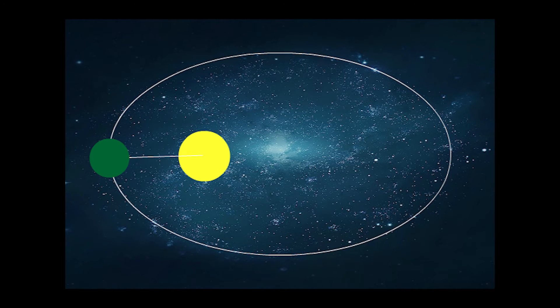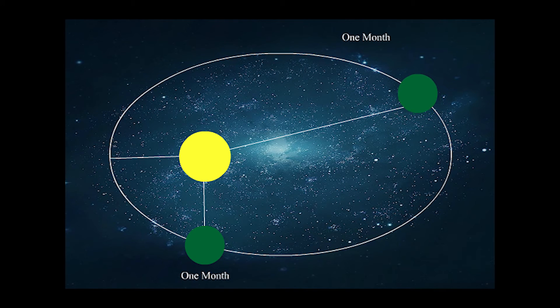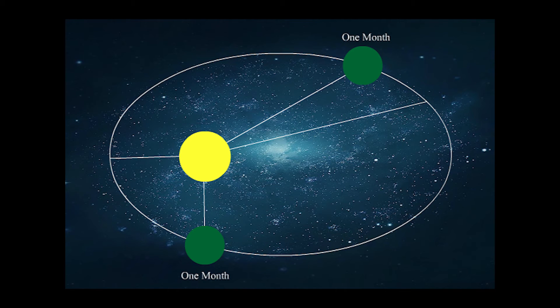The distance the planet moves in a period of time makes a triangle with the sun. For example, when the planet is over on this side near the sun, the distance it moves in a month is quite large and it forms this triangle. When the planet is over on this side farther from the sun, the distance is a lot less and it makes this triangle. But what Kepler's second law states is that the area of both triangles are actually the same. This means that planets move faster near the sun and slower farther away.